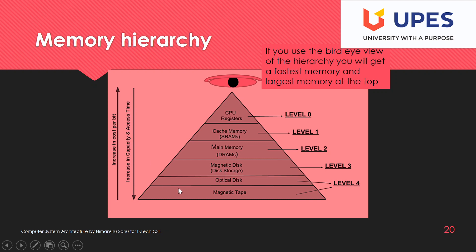Going from top to bottom, the capacity increases as well as access time increases because these are slower memories compared to CPU registers. The target of such organization is to achieve larger, cheaper, and faster memory. This hierarchy is used in every system: register set, then cache memory, then main memory, then secondary memory, then flash memory and optical disc.